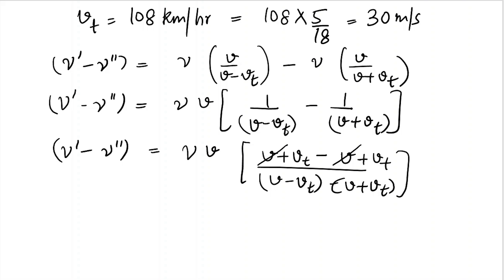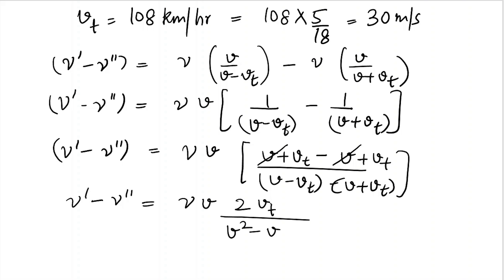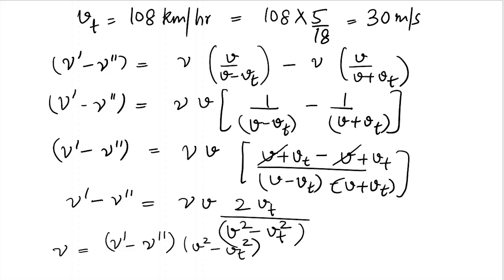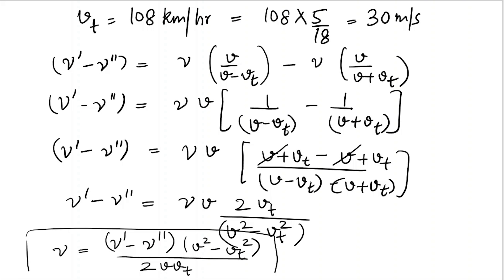After simplification, mu-bar minus mu double-prime equals mu times 2 times vt, all divided by (v squared minus vt squared). Rearranging to isolate mu, we get: mu equals (mu-bar minus mu double-prime) times (v squared minus vt squared) divided by (2 times v times vt). This is the formula we will use.